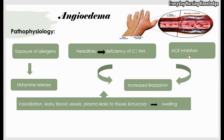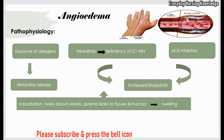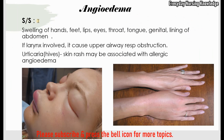ACE inhibitors are specifically discussed because their pathophysiology is different — it is not histamine-based but bradykinin-based. The angiotensin-converting enzyme normally regulates bradykinin levels in our body. When you give ACE inhibitor medicines to inhibit this enzyme, bradykinin levels increase. So both hereditary angioedema and ACE inhibitor-induced angioedema share increased bradykinin, leading to vasodilation, leaky blood vessels, and plasma leaking into tissues.